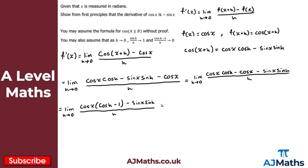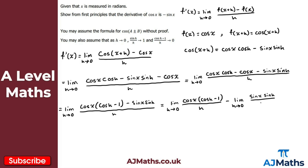Now applying linearity, I split the limit of a sum into the sum of two individual limits. This gives: the limit as h tends to zero of cos x(cos h minus one) over h, minus the limit as h tends to zero of sin x sin h over h.